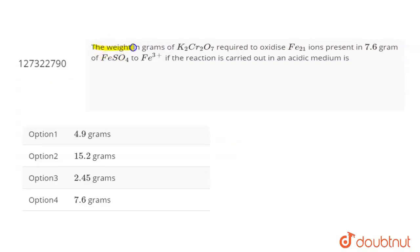The question is the weight in grams of K2Cr2O7 required to oxidize Fe2 positive ions. Fe2 positive ions present in 7.6 grams of FeSO4 to Fe3 positive ions. If the reaction is carried out in acidic media.